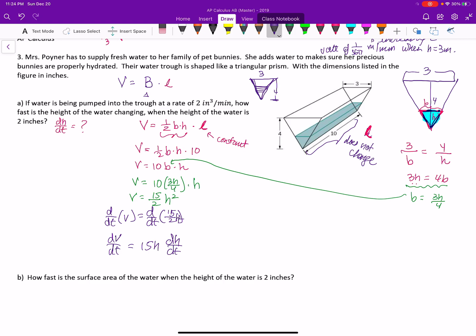I'm interested in when, how fast is the height of the water changing when the height of the water, when H is equal to 2 inches? Now if I look at the formula, I know what dV/dt is. dV/dt was given. dV/dt was 2. So I'm going to substitute in a 2, the 15 times the H, which was also 2, dH/dt.